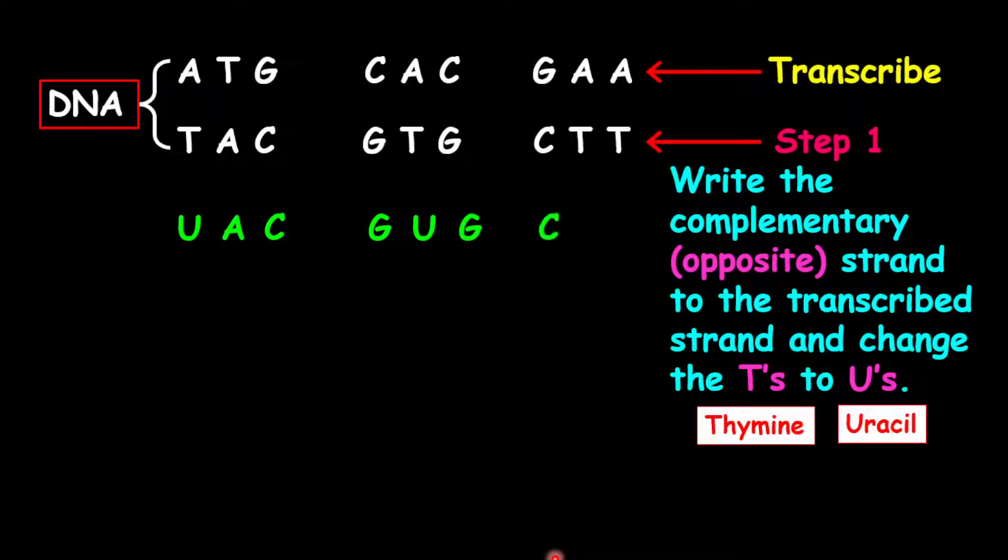Now we're going to read AUG into a chart. So how we're going to read this, we're going to go into our first letter which is from the central point. And so our first letter here is A, then we have U, then we have G. And this corresponds to the amino acid methionine. So methionine is abbreviated MET. So that's our first amino acid there.